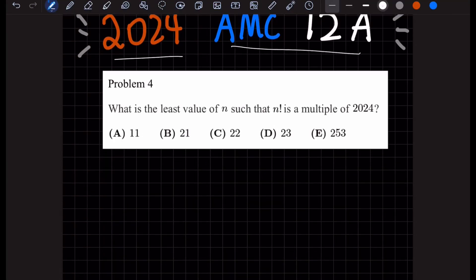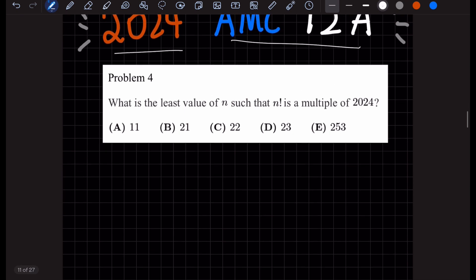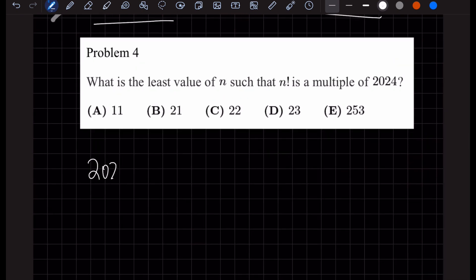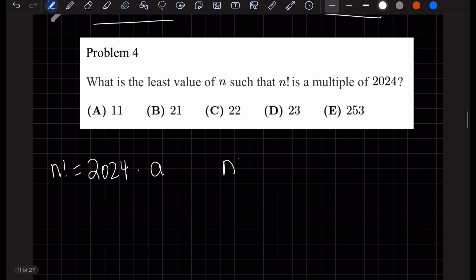What is the least value of n such that n factorial is a multiple of 2024? So given these questions, it's often useful to find the prime factorization of 2024, because the question is asking us n factorial equals 2024 times some number, let's say a. We want n to be the least number possible.